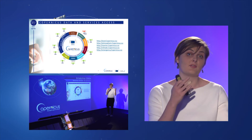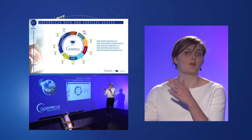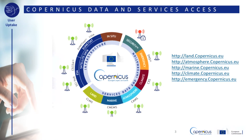Copernicus offers two types of data to the public. There are the satellite images or data from the Sentinel satellites, and there is information or data from the Copernicus services. The services provide a vast array of products, based on satellite data and in-situ data, that deliver information such as on sea surface temperature, land use and land cover, air quality forecast and so forth. There are six Copernicus services in total, and you can download the data from the websites mentioned here.